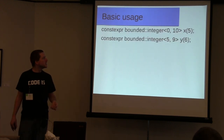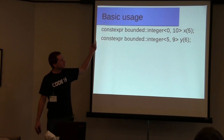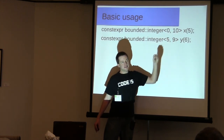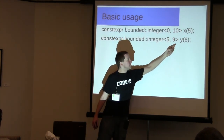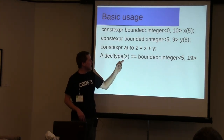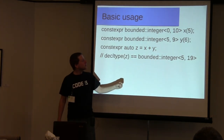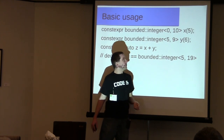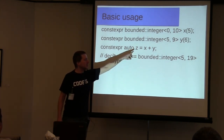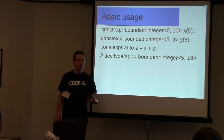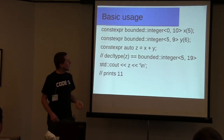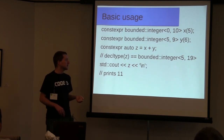Here's some basic usage. This supports constexpr: you'd declare X as an integer always between 0 and 10 with a value of 5, and Y always between 5 and 9 with a value of 6. Then you can say 'constexpr auto z = x + y'. The type of Z is deduced to be an integer between 5 and 19 — you add up the lower bounds and the upper bounds. The compiler knows no checks are needed. It ultimately compiles down to the same underlying integer addition and assignment. You can print it out and it prints 11 as expected — 5 plus 6.